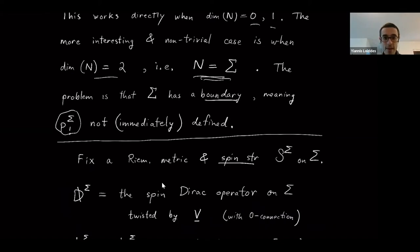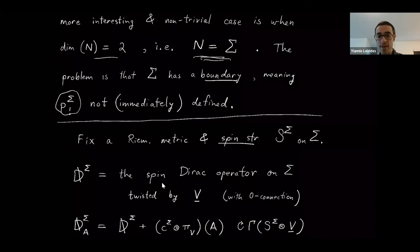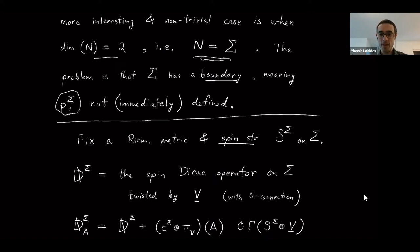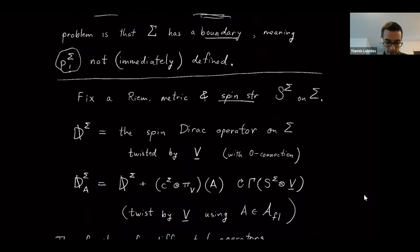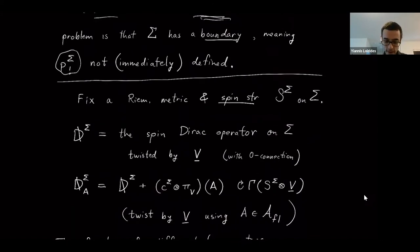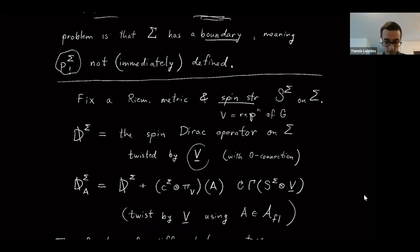I'm going to fix a metric and spin structure on my surface with boundary. It might in some ways be more natural to work with a complex structure — to assume Sigma is a Riemann surface and work with that — but Teleman and Woodward prefer to work with a spin structure because it leads to a slightly cleaner formula. I'll write D-slash-Sigma for the spin Dirac operator twisted by V, where V is a finite-dimensional representation of G.